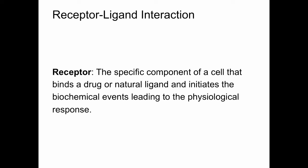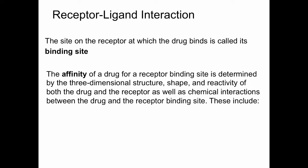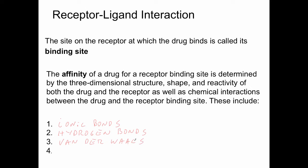A receptor can be defined as the specific component of a cell that binds to a drug or a natural ligand and initiates the biochemical events leading to the physiologic response. A key component of a receptor is the site where the drug or ligand interacts with the receptor, called the binding site. The affinity of a drug or ligand for a receptor binding site is determined by several factors, including the shape or three-dimensional structure of the drug, the reactivity of the drug for the receptor, and the types of interactions between the drug and the receptor binding site. These include ionic bonds, hydrogen bonds, van der Waals forces, and covalent bonds.